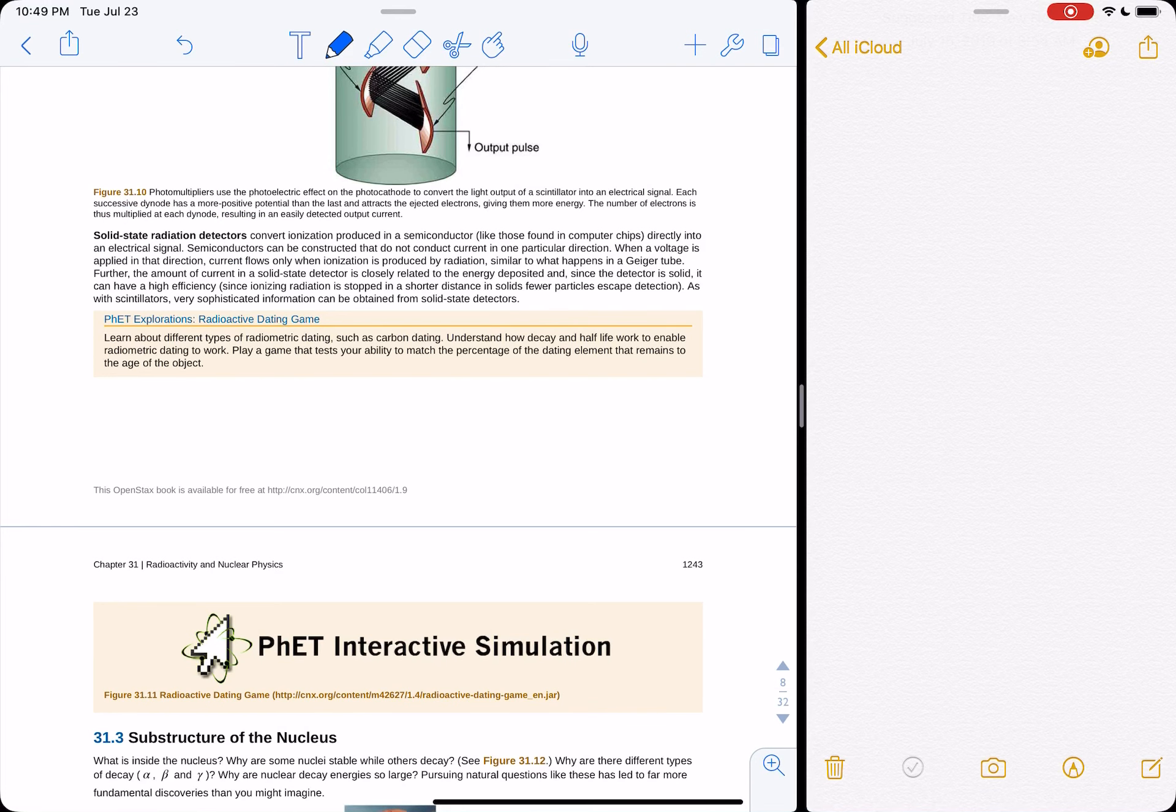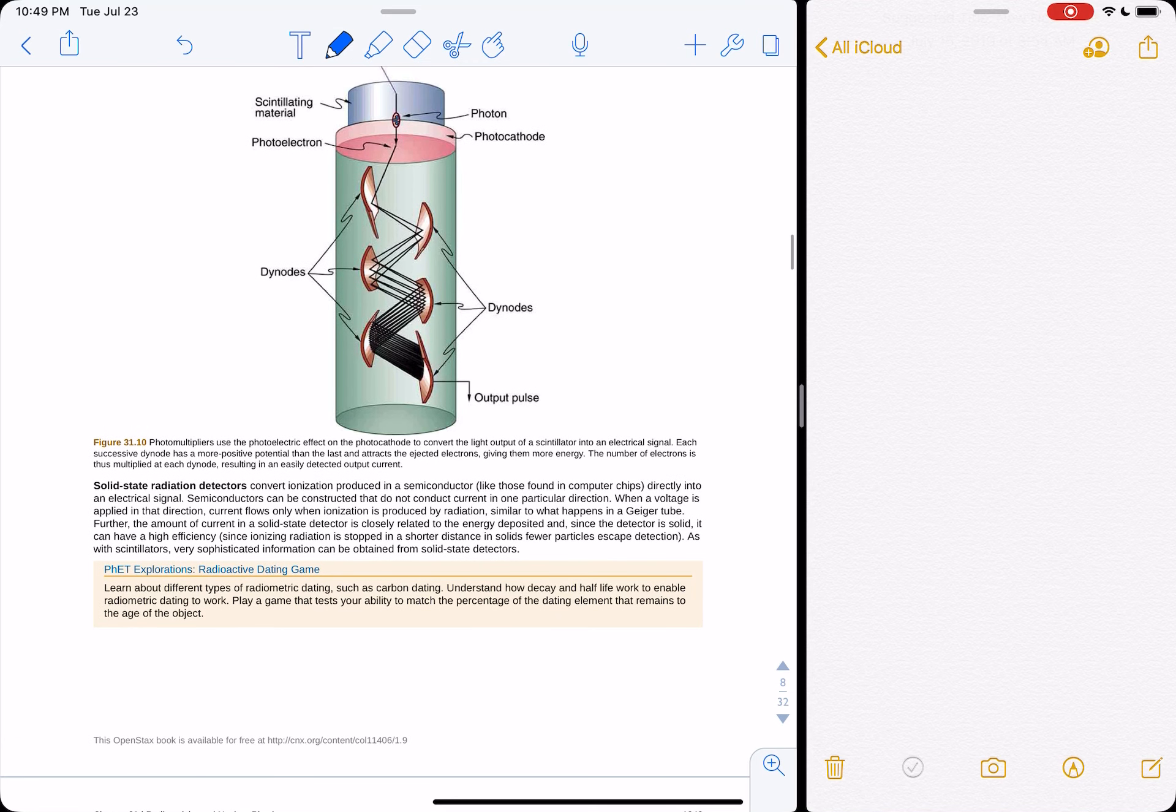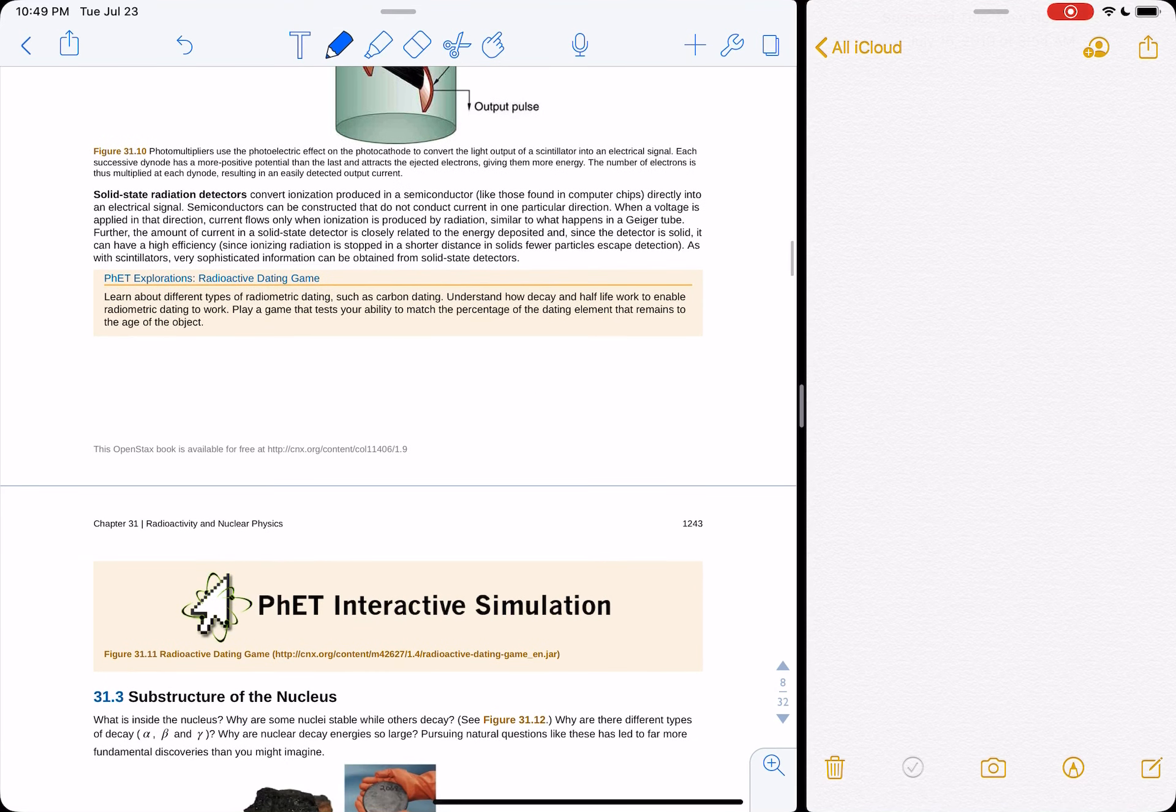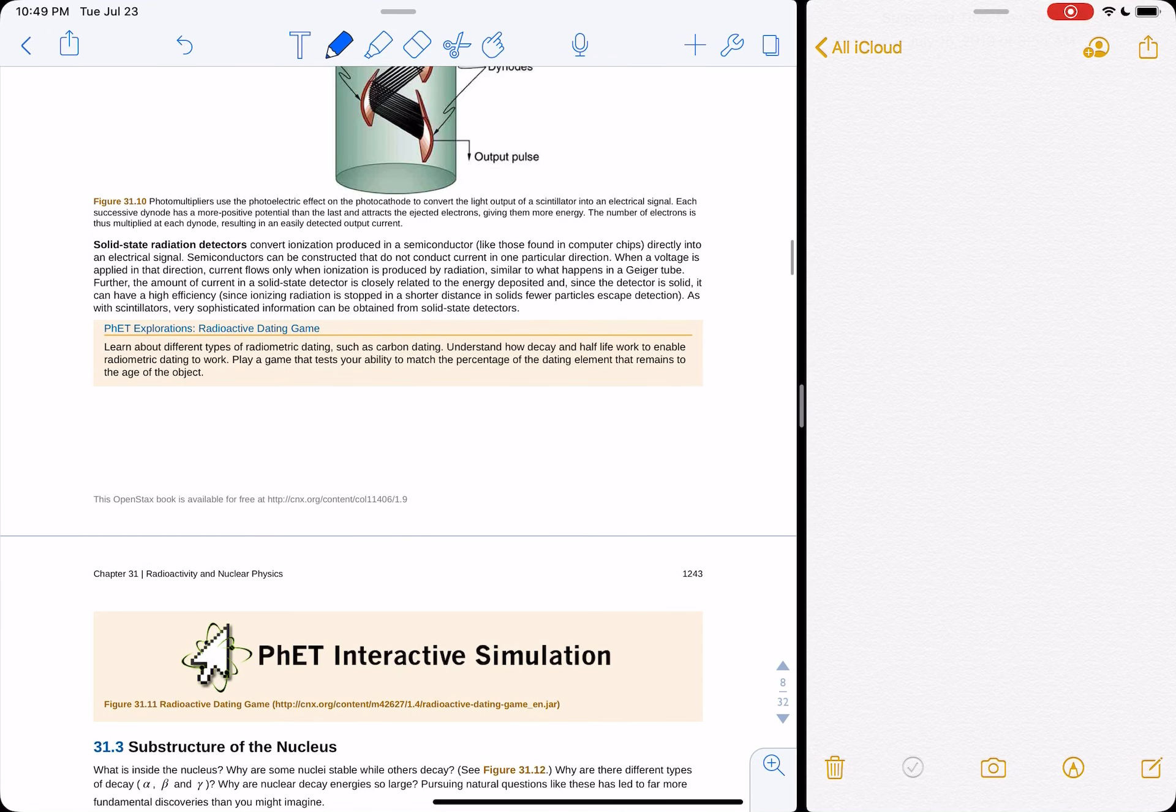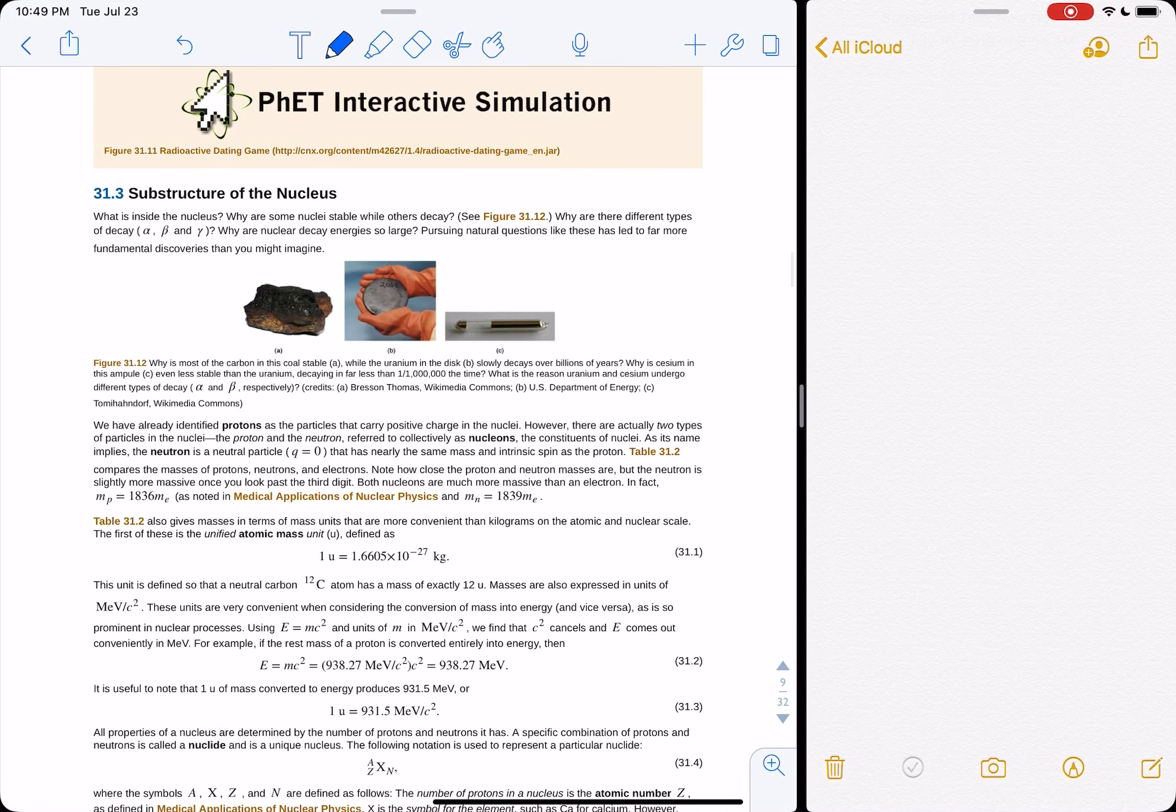There are other types of detectors called SIPMs, silicon photomultipliers. Works on the same avalanche kind of process, but the avalanche process is limited by, or not limited, but you use layers of doped silicon to generate the avalanche of things.